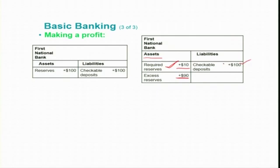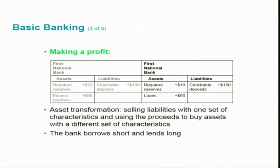The remaining is excess reserve, and as shown before, the liability — checkable deposit — remains $100. Because the bank is a profit-seeking firm, it won't keep this excess reserve simply with the central bank; instead it will prefer to employ this fund by lending it. This is a liability they received through the checkable deposit, and now they will be employing this money. A simple case: this bank is going to lend this money instead of keeping it as excess reserve. The bank got $100 in deposits, kept 10% as required reserve, and lent the remaining $90.